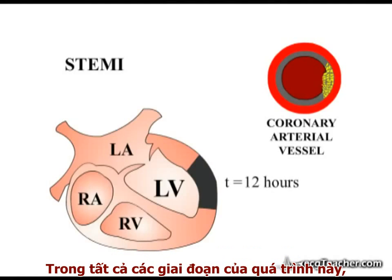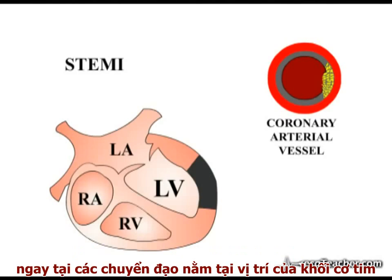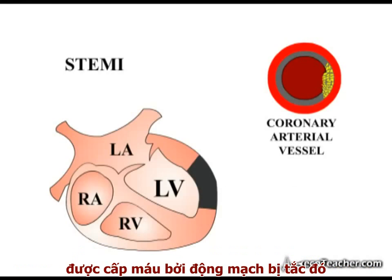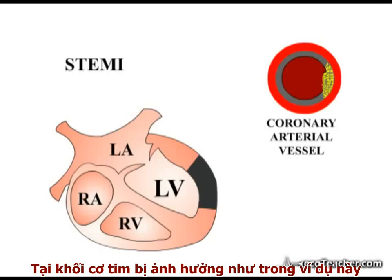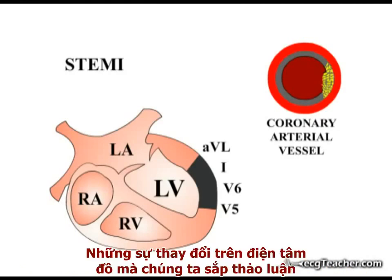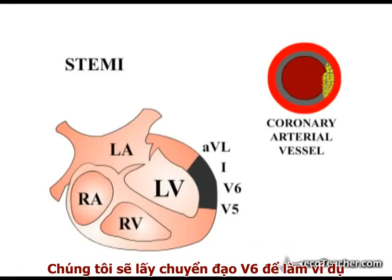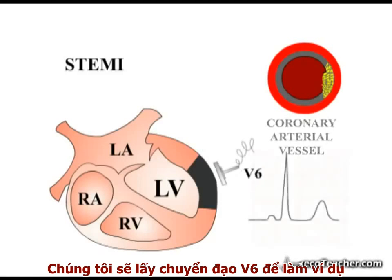At all stages of this process, characteristic changes are produced in the ECG leads directly overlying the region of myocardium that the occluded vessel supplies. As the region of myocardium affected in this example lies directly under leads V5, V6, lead I, and AVL, the ECG changes we are about to discuss are observed in these leads. We will examine these changes in lead V6 as an example.